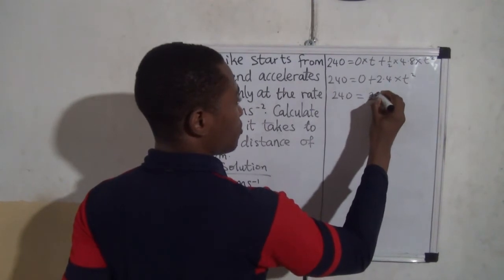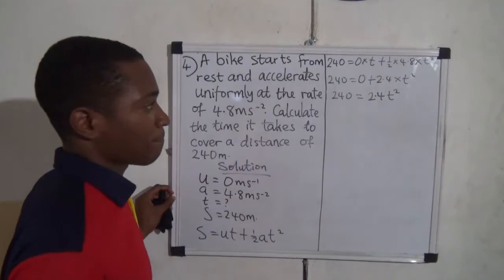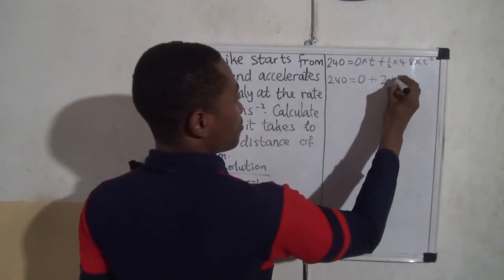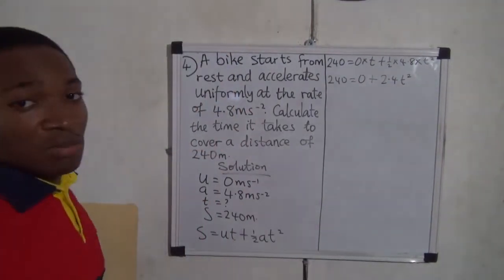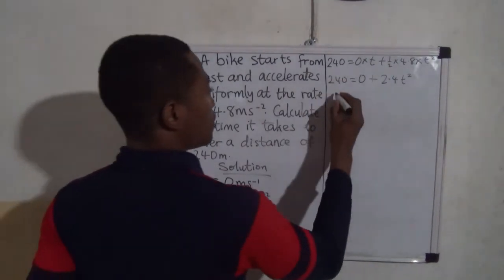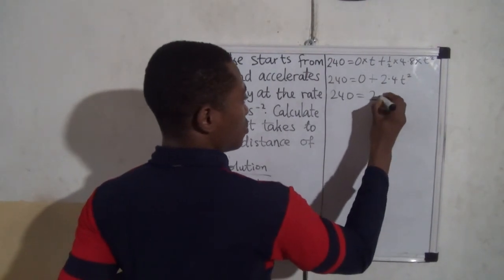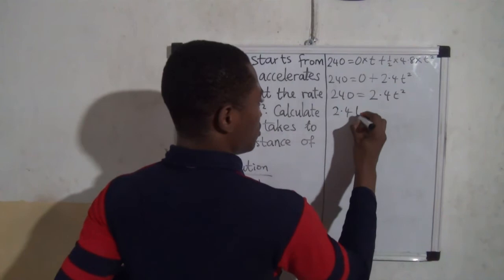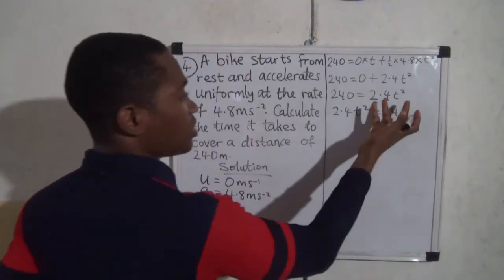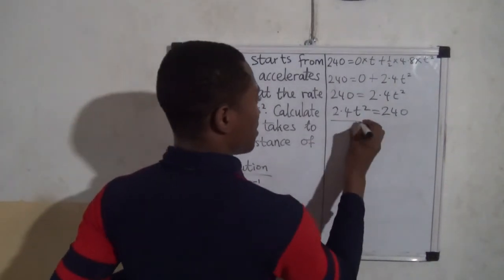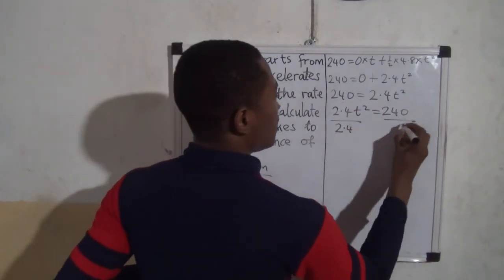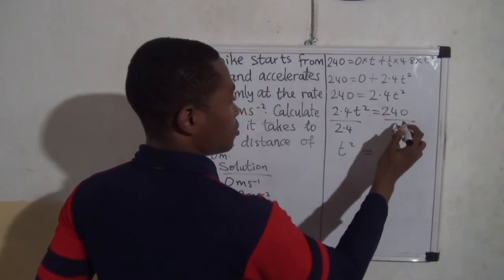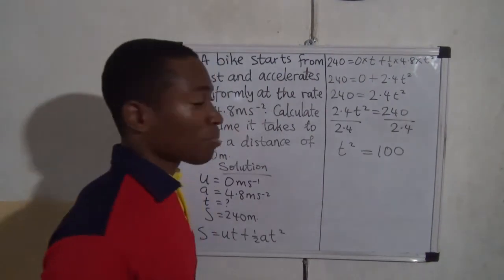So 240 = 0 + 2.4t². The zero amounts to nothing, so this simplifies to 2.4t² = 240. To get t², we divide both sides by the coefficient of t², which is 2.4. Dividing both sides by 2.4: 2.4 cancels on the left, leaving t² = 240 ÷ 2.4, which equals 100. So t² = 100.